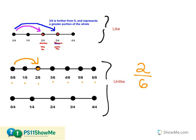I'll do this once more with fourths, because I'm going to be comparing three-fourths to two-sixths. So once again, I'm going to partition a second number line, but this time I'll be breaking it into four different parts, starting with zero-fourths, one-fourth, two-fourths, three-fourths, and four-fourths, which is the same thing as a whole.